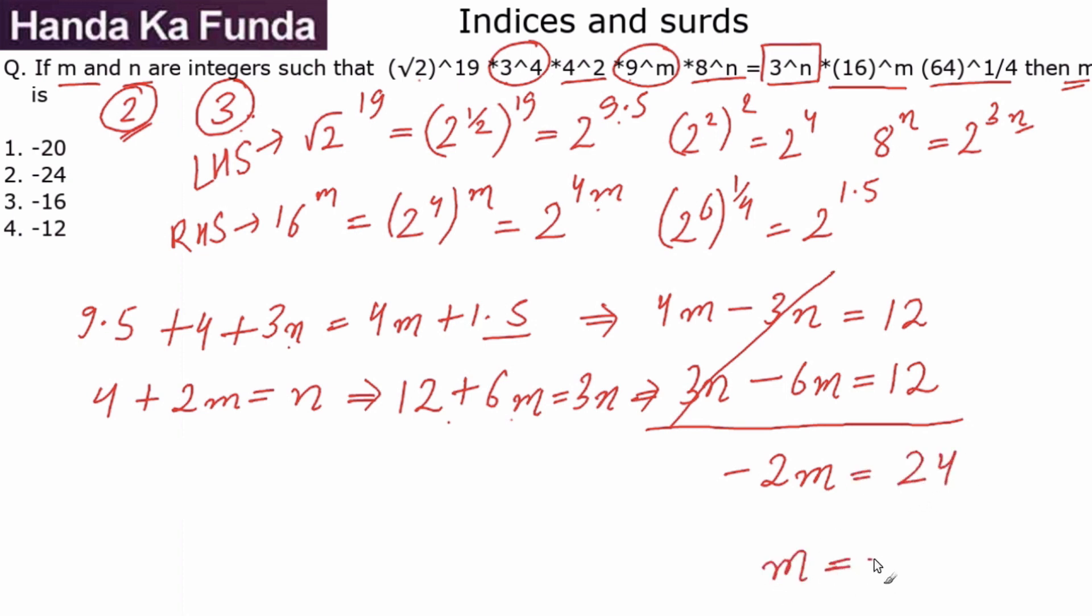I will be left with minus 2m is equal to 24, or I will get the value of m, which is what I was trying to find out, as minus 12, which is given to me as option 4. So this particular question I would say is really really simple. All you need to do is to be comfortable with the powers and the conversion of powers.